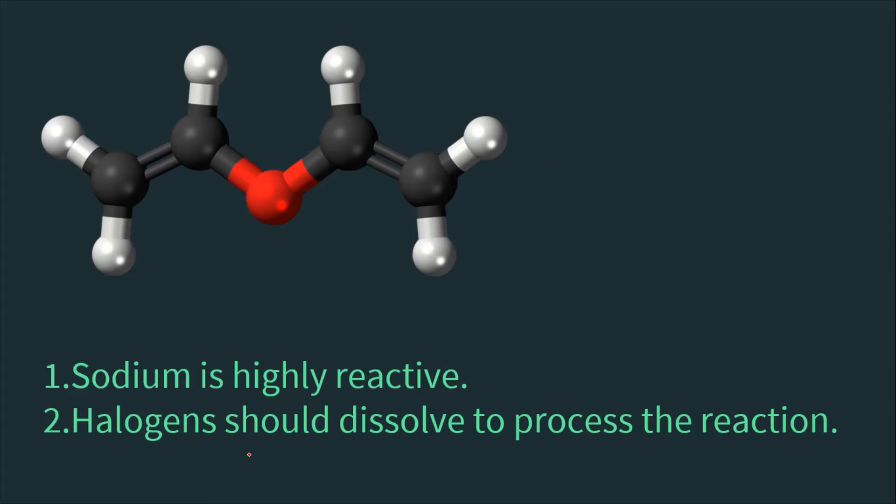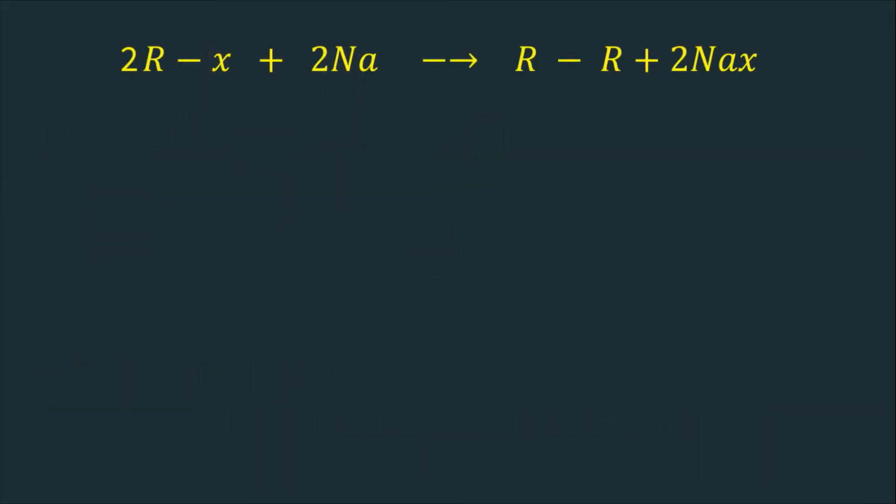Now let's get into examples. So here there are two alkyl groups. They divide from alkyl halide and they form alkane, and this halogen forms bond with sodium and they give byproduct as sodium halide.